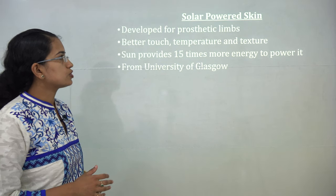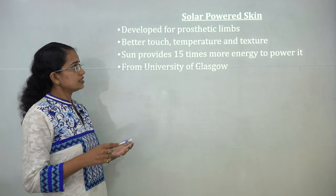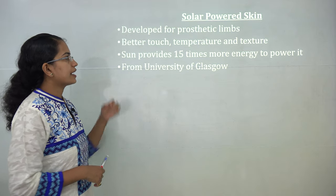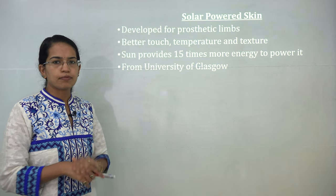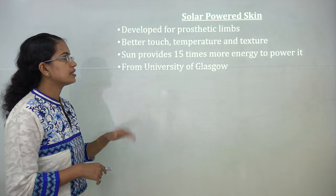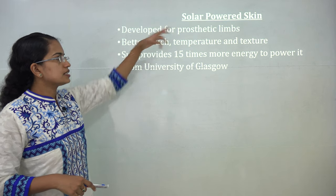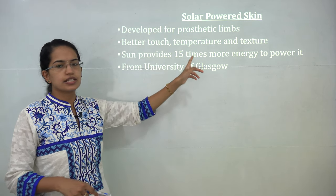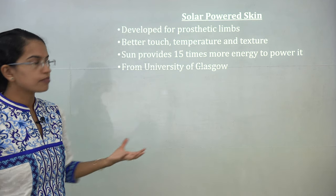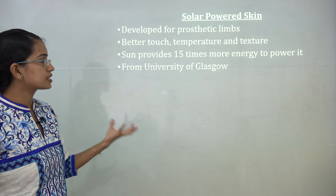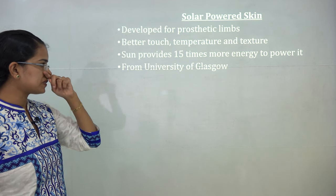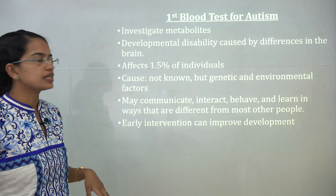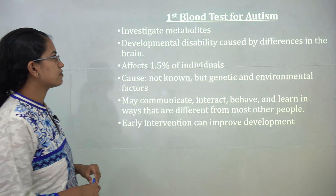Solar-powered skin has been developed for prosthetic limbs, offering better touch and temperature sense than normal skin. Being powered by the sun, it has 15 times more energy than a normally powered artificial skin. The first research on this was done at the University of Glasgow.